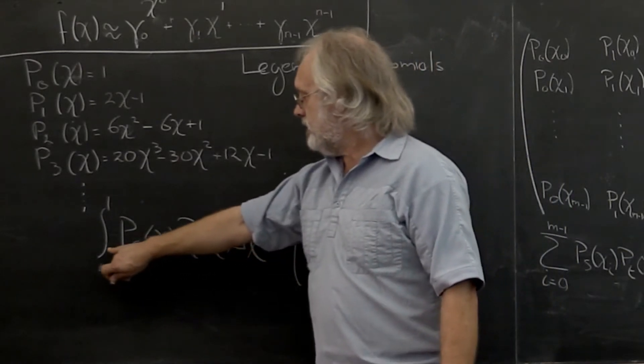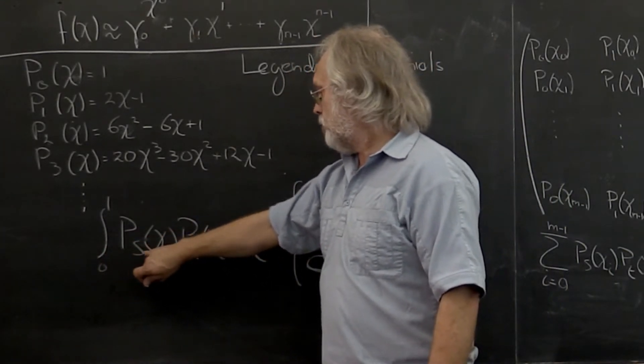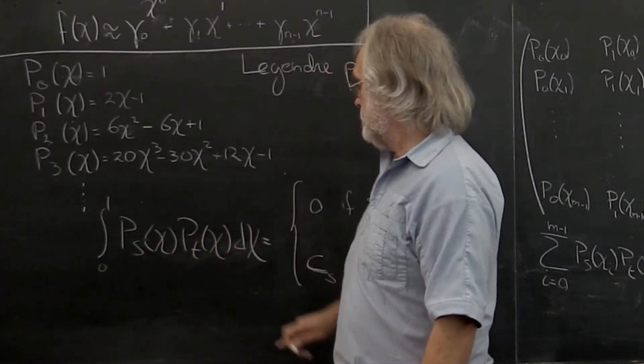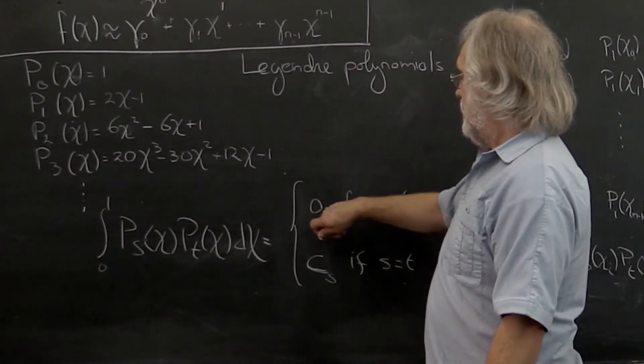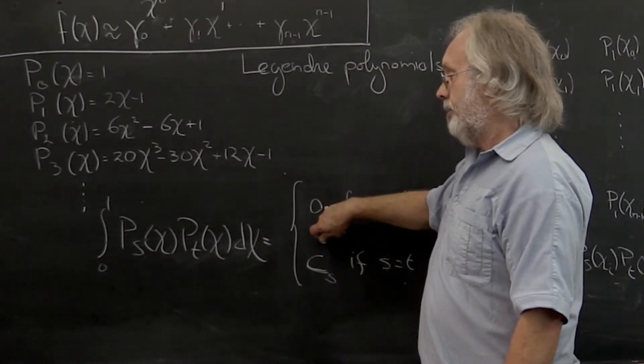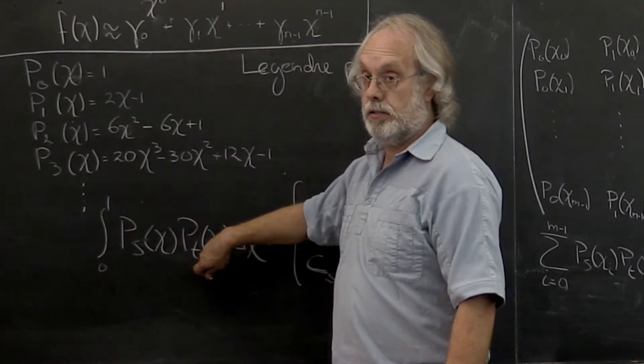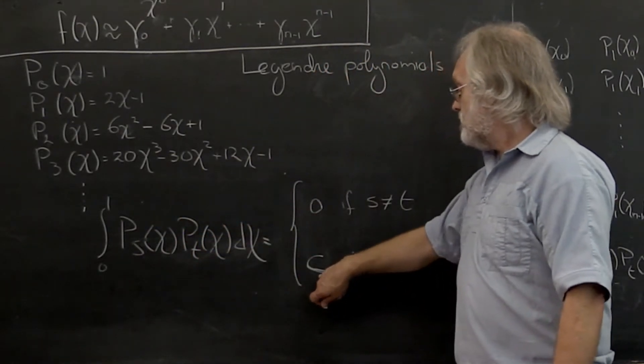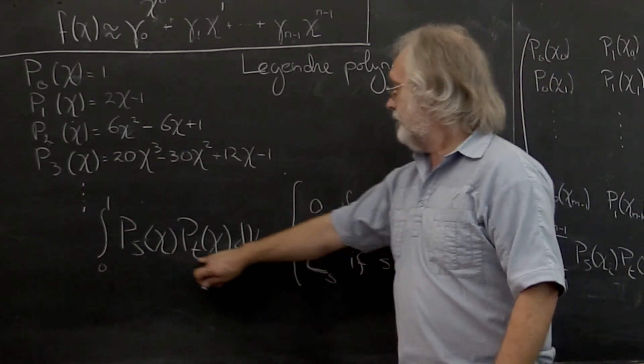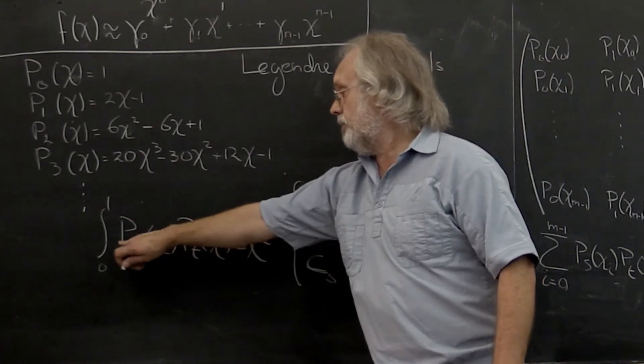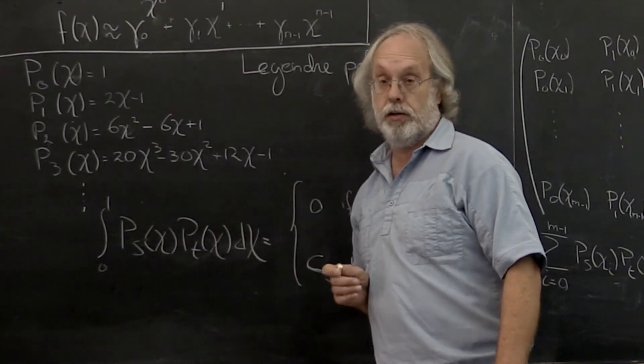They have the property that if you integrate the product of any two of these, then either you end up with 0 if you're not integrating the same two polynomials multiplied together, or some constant that depends on s if s is equal to t. In other words, if you integrate the square of the polynomial.